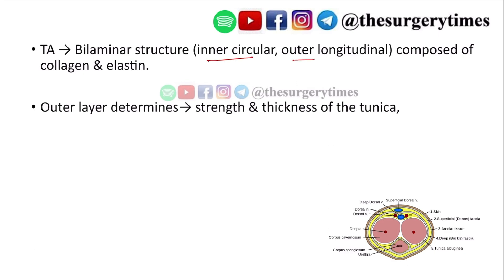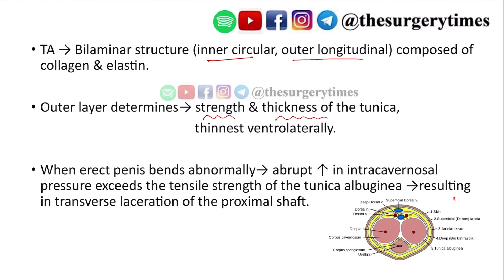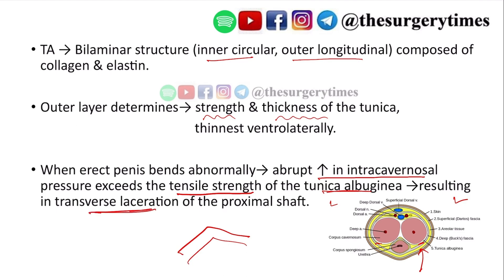Tunica albuginea is a bilaminar structure — inner circular and outer longitudinal — composed of collagen and elastin. The outer layer determines the strength and thickness. It is thinnest in the ventrolateral region, so the highest chance of fracture occurs there. When the penis is erect and bends abnormally, intracavernosal pressure exceeds the tensile strength of the tunica albuginea, most commonly causing a transverse laceration of the proximal shaft.